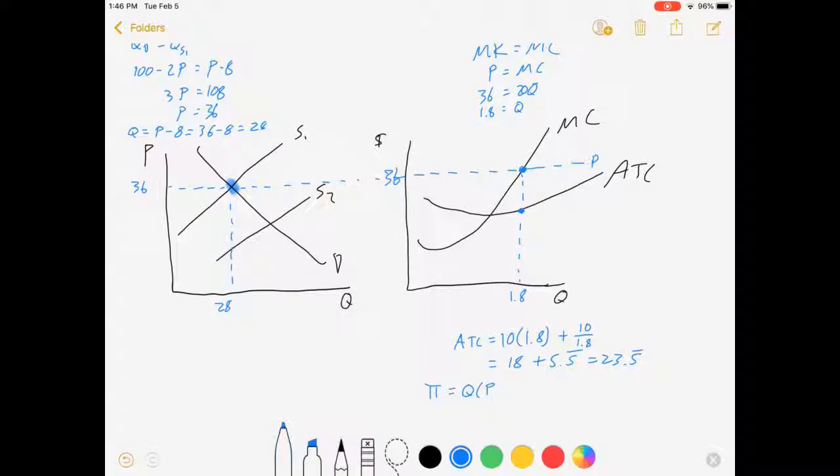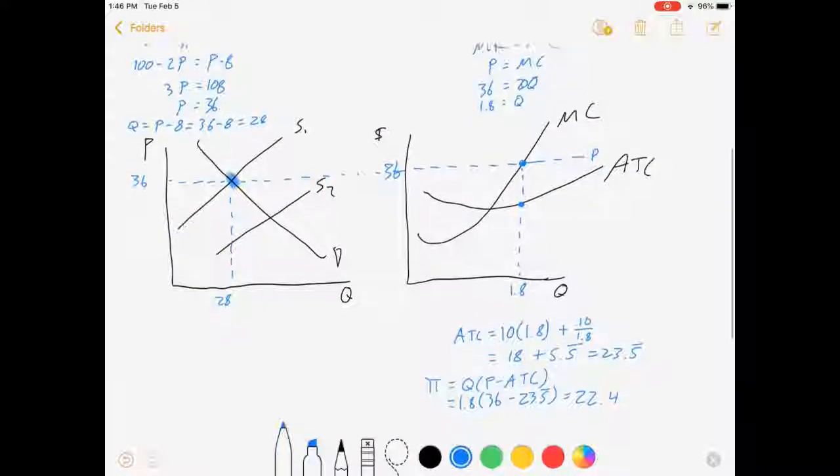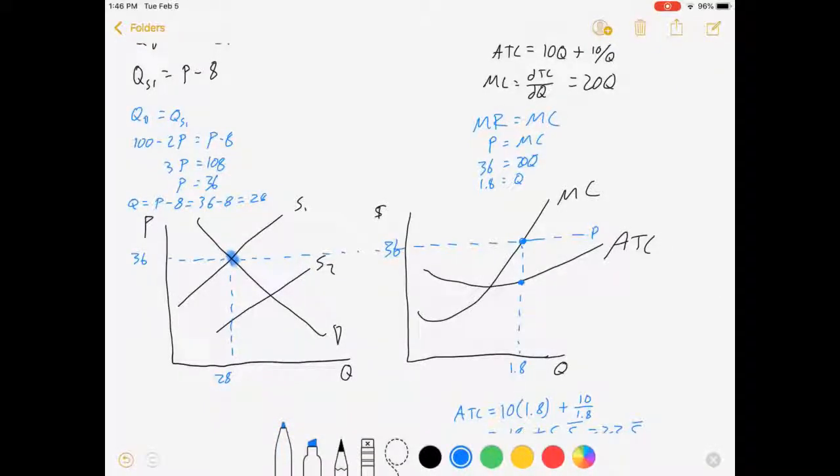So the firm's profit then, quantity times price minus average total cost is 1.8 times 36 minus 23.5s, which comes out to be 22.4. All right, there we go. We've successfully linked our supply and demand market in the short run with our individual firm. We found that supply and demand is chosen by market forces beyond one firm's control, and when that firm takes prices given, it will maximize profit according to marginal revenue cost. Because it's perfect competition, that's the same thing as saying price equals marginal cost.